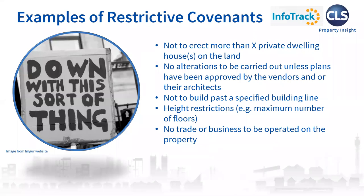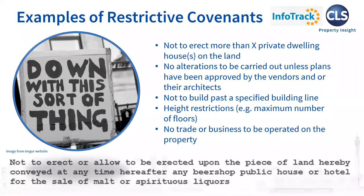Typical restrictive covenants commonly seen on title deeds include: limits on building a certain volume of residential properties, or even completely prohibiting redevelopment; requirements that no alterations be carried out unless plans have been approved by the vendor or their architects; requirements to seek approval on pruning or pollarding trees even without a TPO; building line restrictions or height restrictions such as a maximum number of floors; and prohibitions on operating a trade or business on the property. On screen is a nicely worded historical covenant prohibiting the erection of any beer shop, public house or hotel for the sale of malt or spirituous liquors.